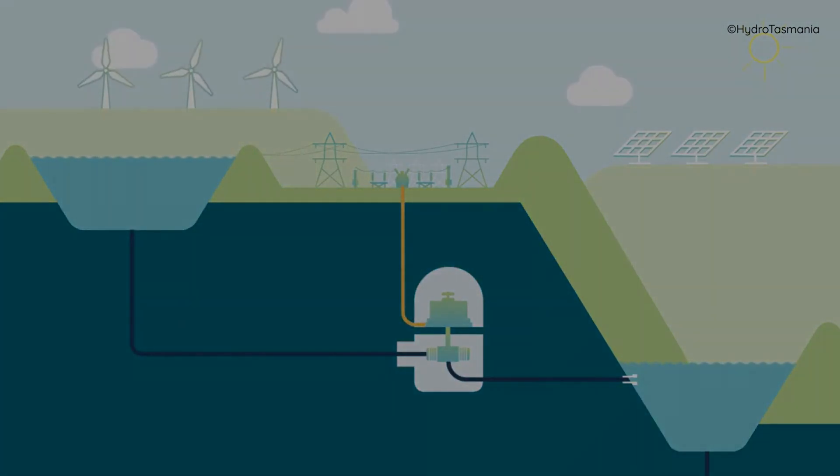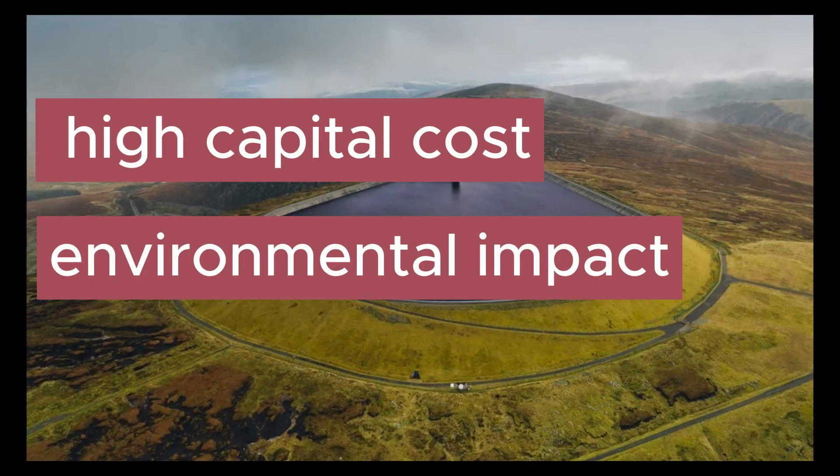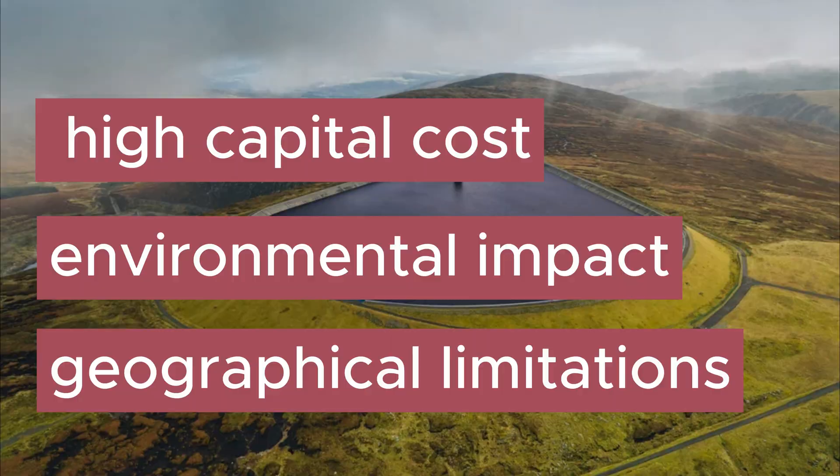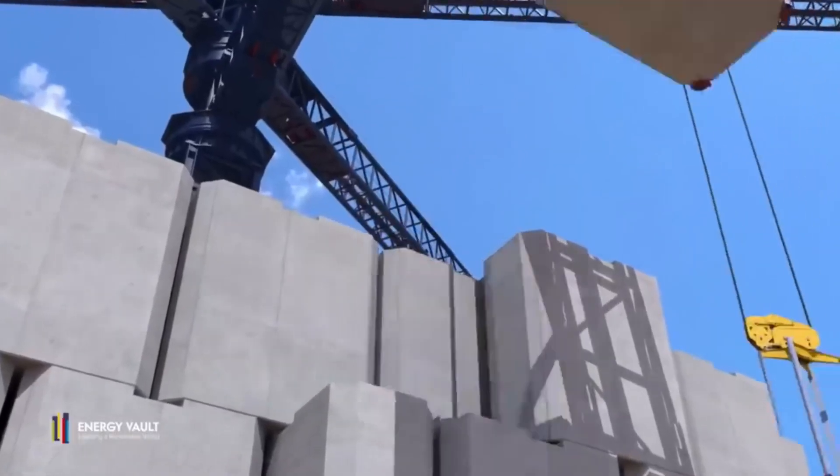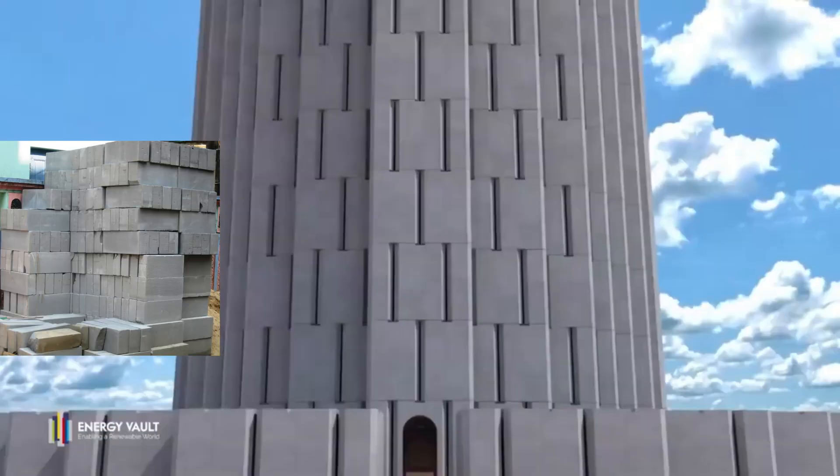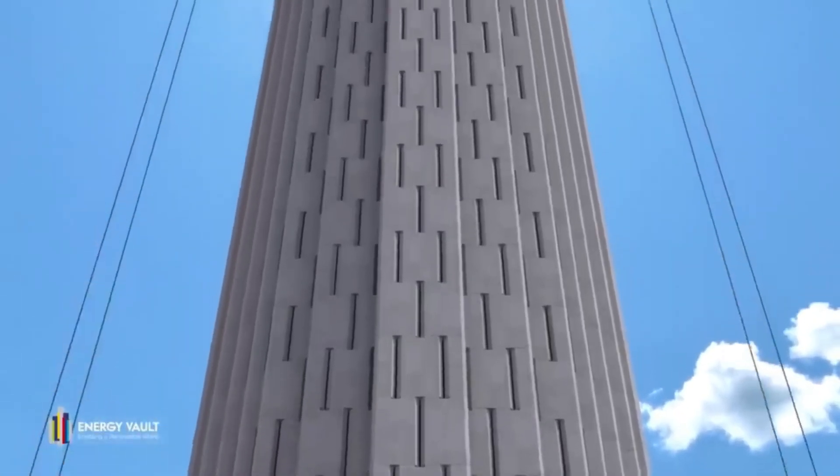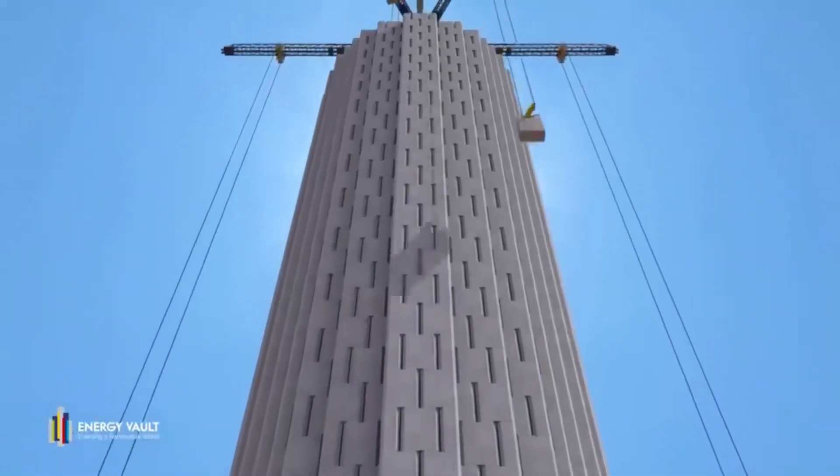However, pumped hydro has significant drawbacks, such as high capital cost, environmental impact, and geographical limitations. A gravity battery system can overcome these issues by using different materials, such as concrete, steel, or rocks, as the storage medium and by being more flexible and scalable in terms of location and size.